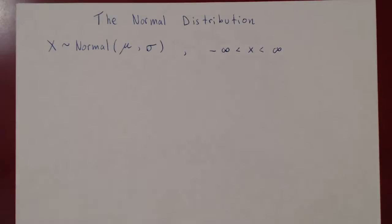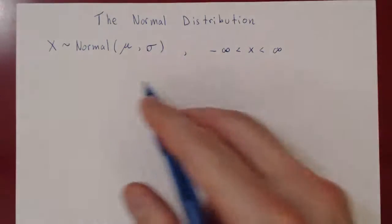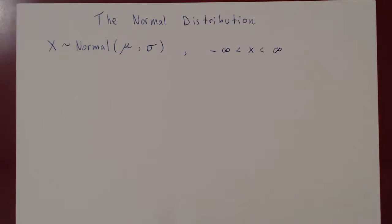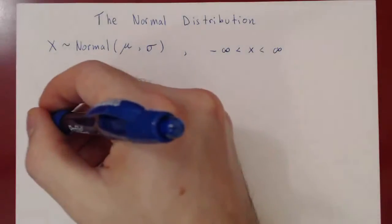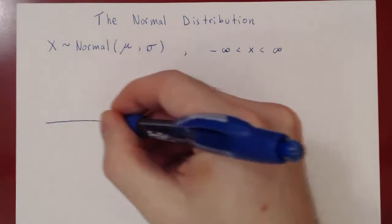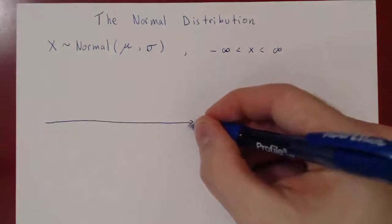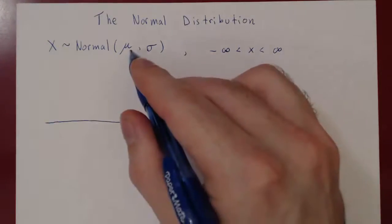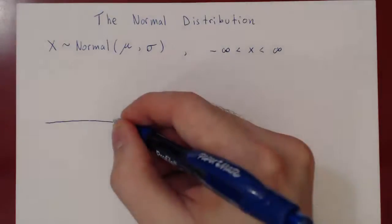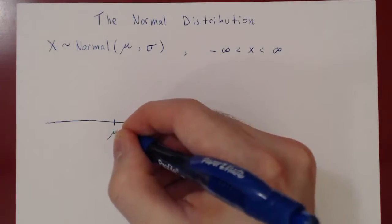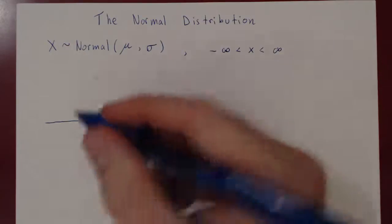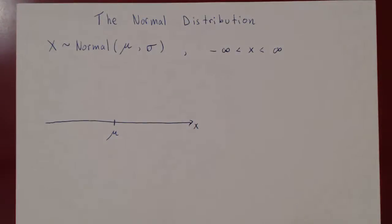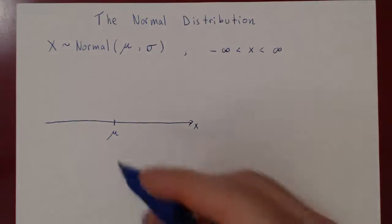In the case of a continuous random variable, how do we compute probabilities? We have to look at the corresponding density function. You have your axis for the x values, the mean is mu — that's the average value of the distribution — and the function looks a bit like a bell. It's sometimes called the bell-shaped distribution or bell curve.